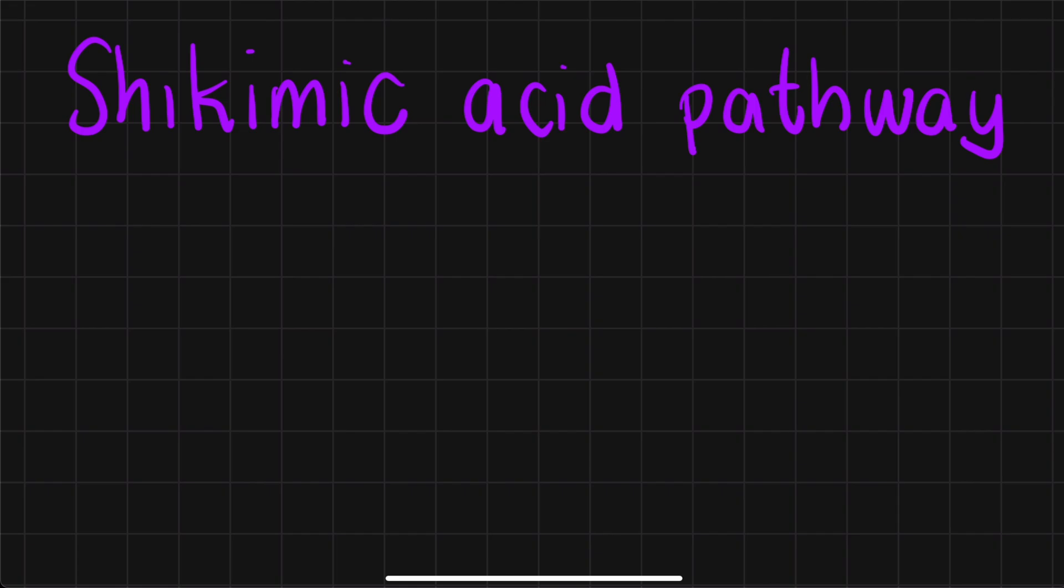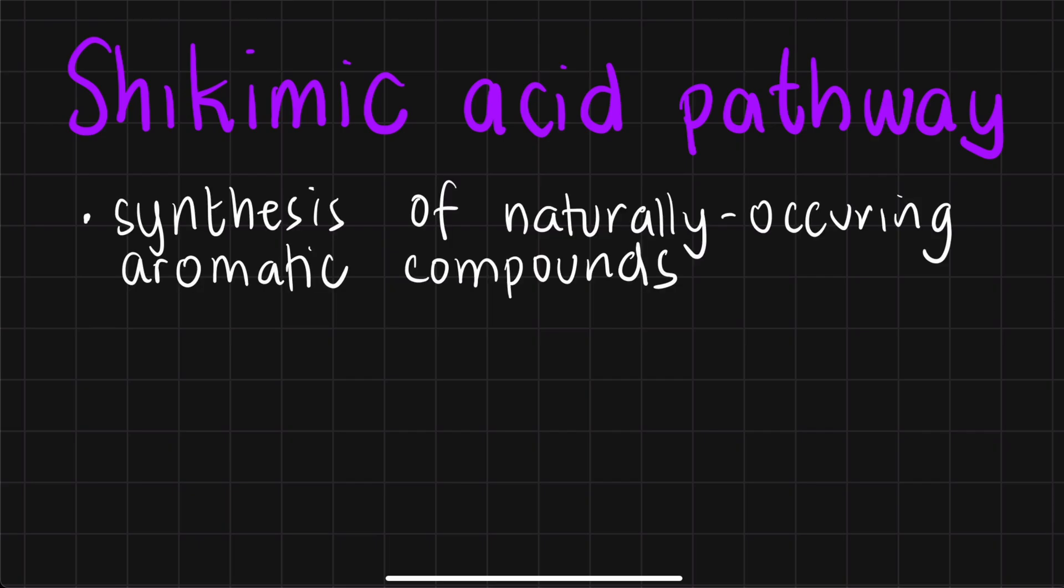In general, the shikimic acid pathway is the synthesis of many naturally occurring aromatic compounds. If you're studying natural products right now, plant chemistry for example, and you've heard of words like alkaloids or some glycosides or maybe volatile oils, and you know that those compounds you're studying have benzene rings or other aromatic rings in them, a lot of them come from this process.